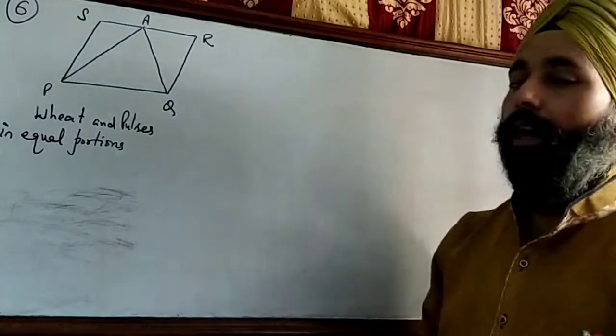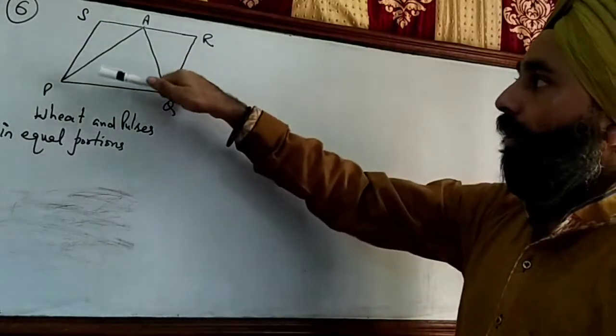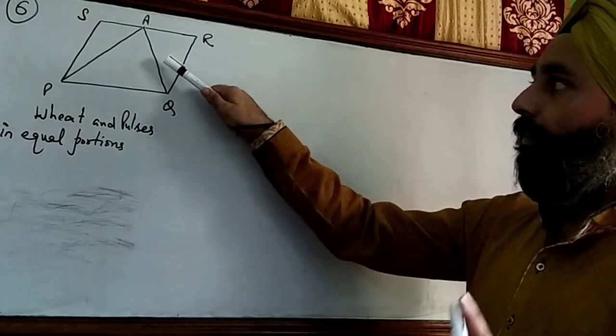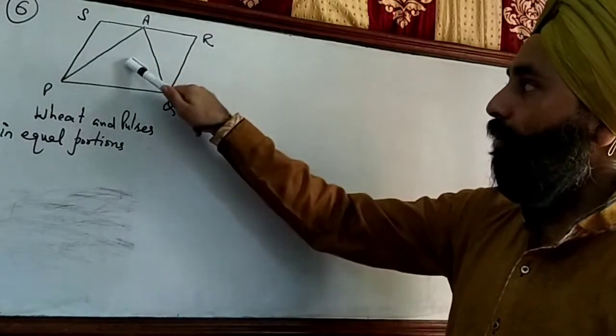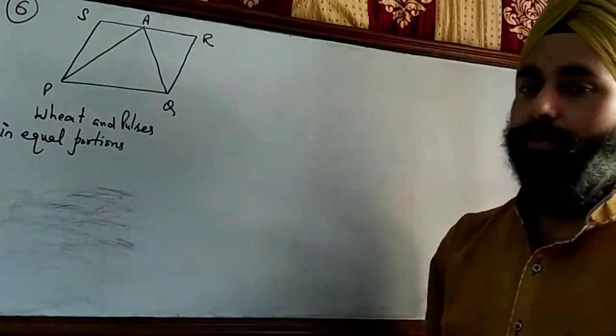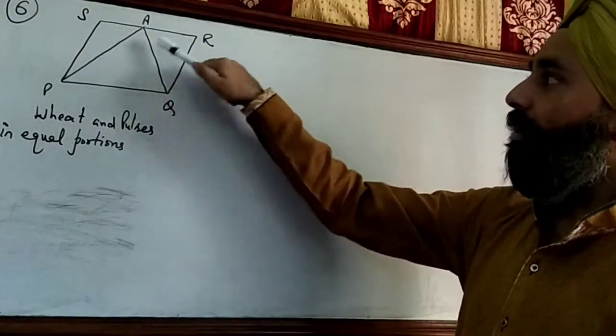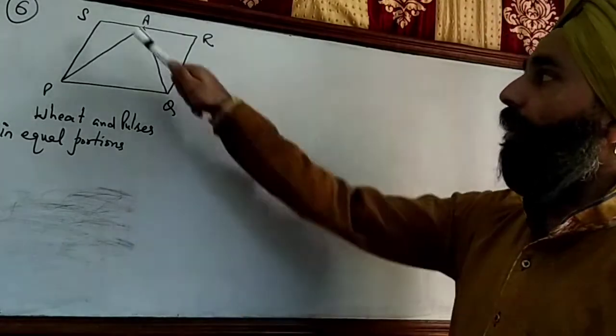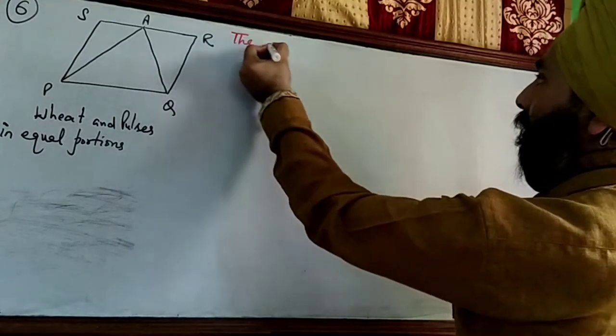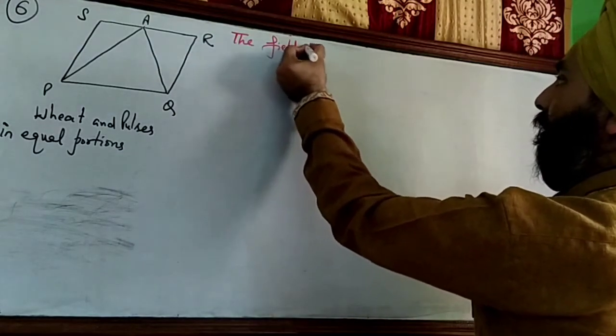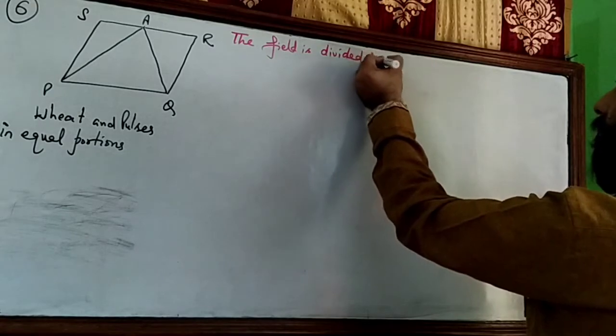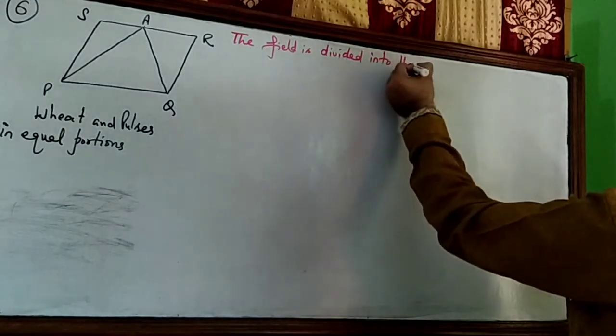First question is: In how many shapes is the field divided? Here the field is divided into three parts - one, two, three. And all of these three are triangles. So the field is divided into three triangular portions.